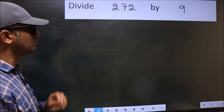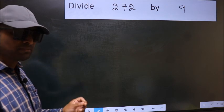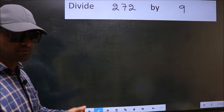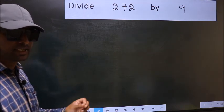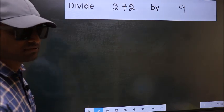Divide 272 by 9. While doing this division, many make this mistake. What is the mistake that they make? I will let you know. But before that, we should frame it in this way.